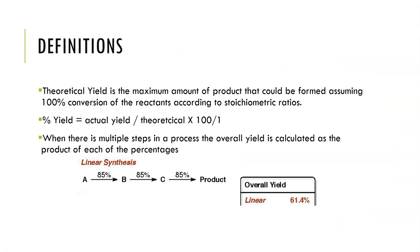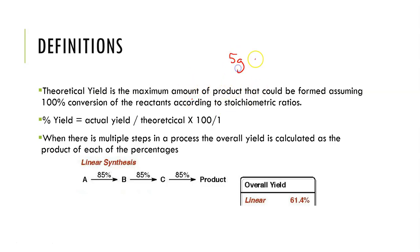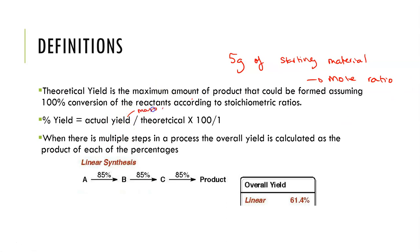The last thing I want to talk about is how we discuss theoretical yield or overall yield. This is the maximum amount of product that can be formed, assuming 100% conversion of the reactants according to stoichiometric ratios. So to find the theoretical yield, we base it off the reaction: if we start off with 5 grams of our starting material, we work out how many moles that is, use mole ratios to work out how many moles of product that would give us, and then convert that back into mass. Once we've done that, we take the actual yield — the mass in grams obtained — divided by the theoretical yield, and multiply by 100 to get the percentage.